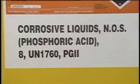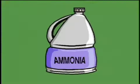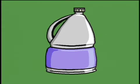First, the identity of the substance must be marked on the label. Usually, a chemical is identified by a proper name, such as ammonia. But a substance may also be referred to by a common name, such as bleach.